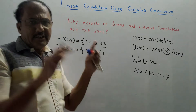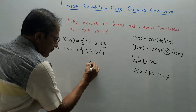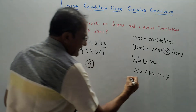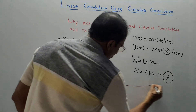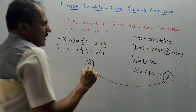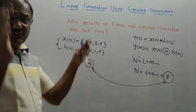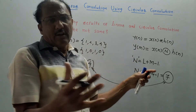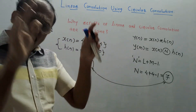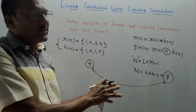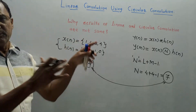Each sequence x(n) and h(n) contains 4 samples, so the result of circular convolution will have 4 samples, whereas the result of linear convolution will have 7 samples. This is the reason why the answers of linear and circular convolution are not the same. There is one method by which you can perform linear convolution using circular convolution — that is, you can obtain the same answers from both. Let us solve a numerical example to make this concept clearer.